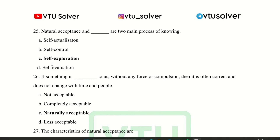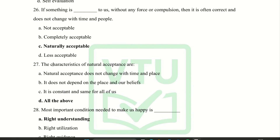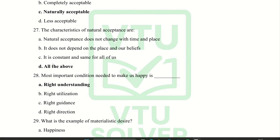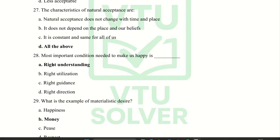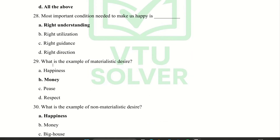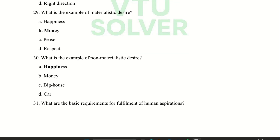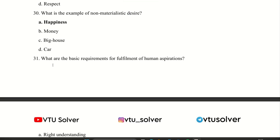If something is naturally acceptable to us without any force or compulsion, then it is often correct and does not change with time and people. The characteristics of natural acceptance are all of the above. The most important condition needed to make us happy is right understanding. What is an example of a materialistic desire? Money. What is an example of a non-materialistic desire? Happiness.